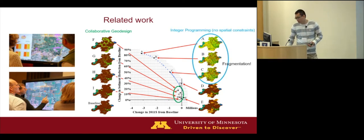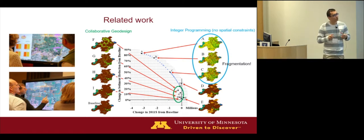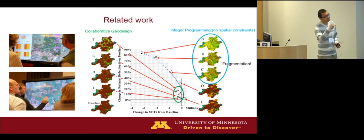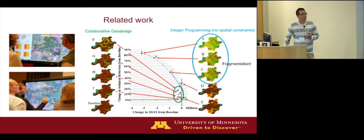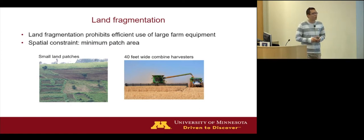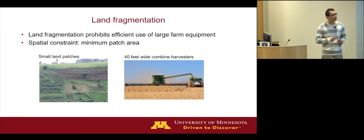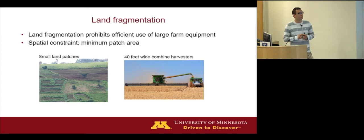On the other hand, we tried conventional integer programming — an optimization approach without any spatial constraints. The algorithm can indeed maximize water quality under different budget constraints, but there exists a large amount of spatial fragmentation. This fragmentation consists of small, tiny patches of land uses, land covers, or land management practices. These small patches are not practical for large, modern farm equipment and prohibit efficient use of those machines.